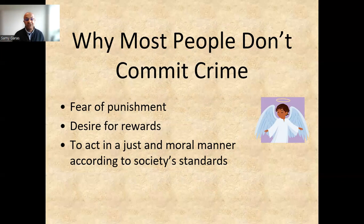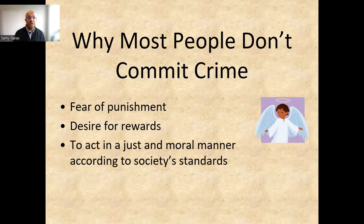But the question remains: why do most people not commit crimes? Number one, because of legal punishment — if discovered, there are years in prison or financial penalties. Another reason is that people want to act properly so they can get rewarded by their companies. Another reason is to act in a just and moral manner according to society's standards, because once discovered by society, they might be isolated or intimidated.